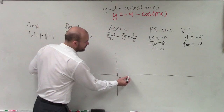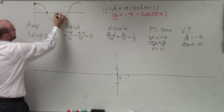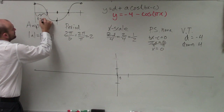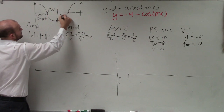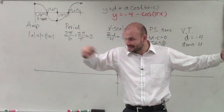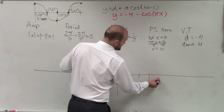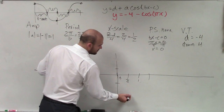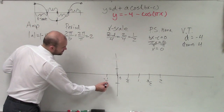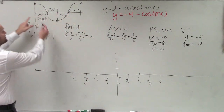We know our x scale is one half. That means between each one of my points, the distance is the x scale — the distance between each important point is your x scale. So the x scale is one half. When determining your tick marks: that's one half, 1, three halves, 2 — and going in the negative direction: negative one half, negative 1, negative three halves, negative 2. That is the distance between each of my important points.